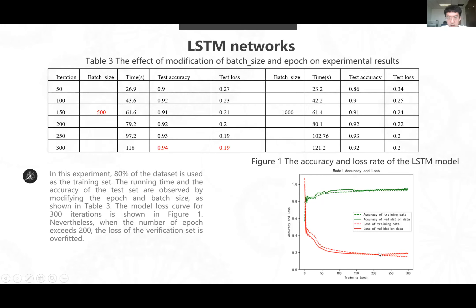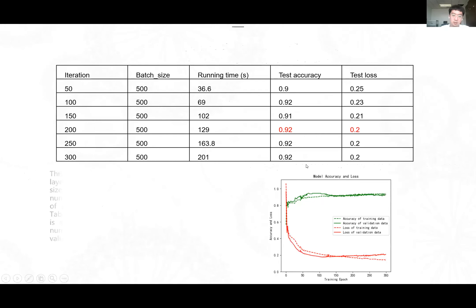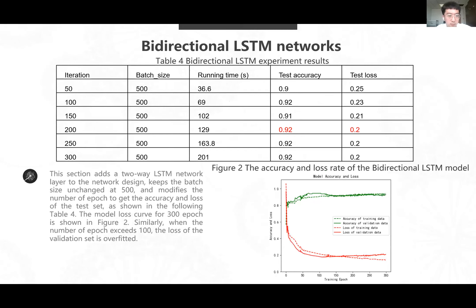And this is the bidirectional LSTM networks. This section adds two-way LSTM network layer to the network design. And in figure two, we can see when the number of epochs exceeds 100, the loss of the origin set is overfitted.